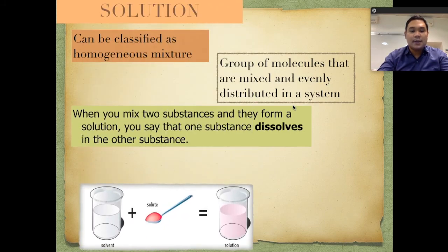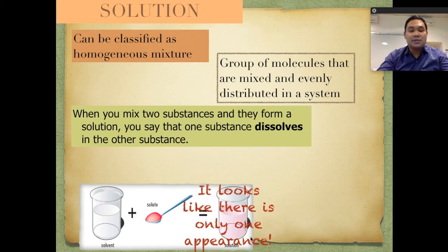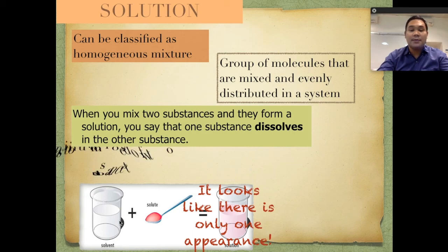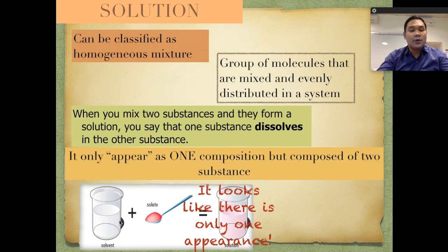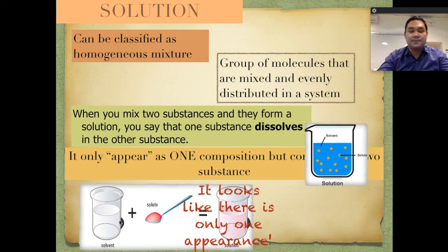For example, we have this pink powder — you put it in water and therefore you create a solution. The characteristic of this liquid solution is that it looks like there is only one appearance. We cannot distinguish which one is the solute or which one is the solvent. We cannot distinguish the two substances anymore because they only appear as one composition, but in reality it is composed of two substances.